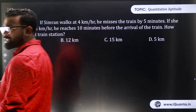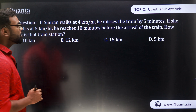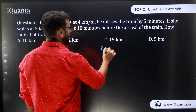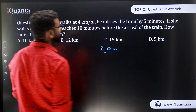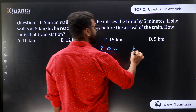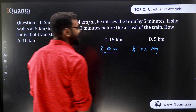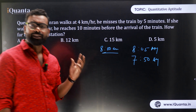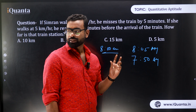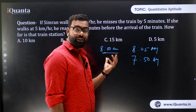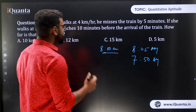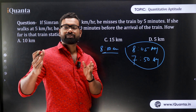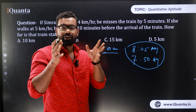The distance is fixed here, but the speed is not fixed. Let's say the train leaves at 8 a.m. In the first case, she reaches 5 minutes late — at 8:05 a.m. In the second case, she reaches 10 minutes early — at 7:50 a.m. The difference is 15 minutes. You can also compute it as 5 + 10 = 15 minutes.